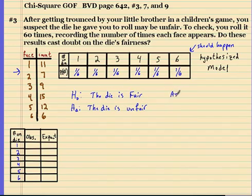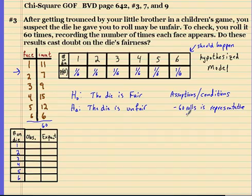Now we have to go to a few assumptions slash conditions. So, we did it 60 times. We rolled the die 60 times, and that 60 has to be a representation of all possible rolls. The 60 rolls is representative of all rolls.